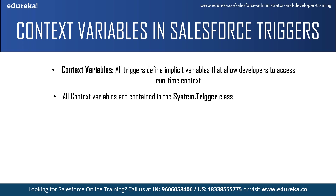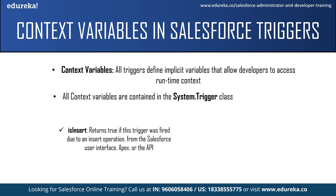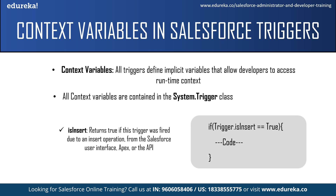All context variables are contained in the System.Trigger class. The first context variable is isInsert — this returns a true value if the trigger was fired due to an insert operation. For example: if Trigger.isInsert == true, only then will that set of code be executed. It is essentially checking a condition, and only if the condition is true will the code execute.